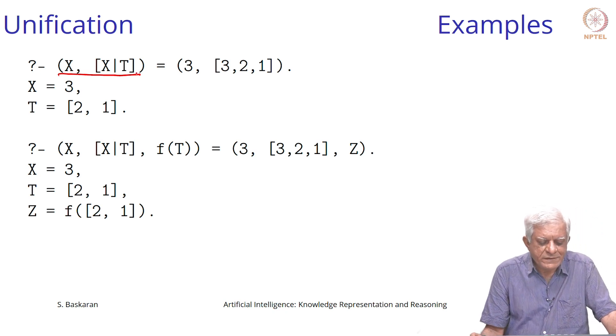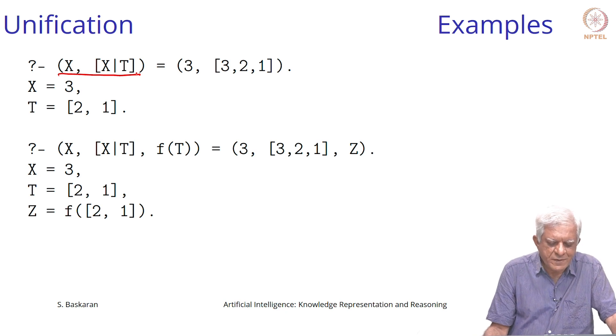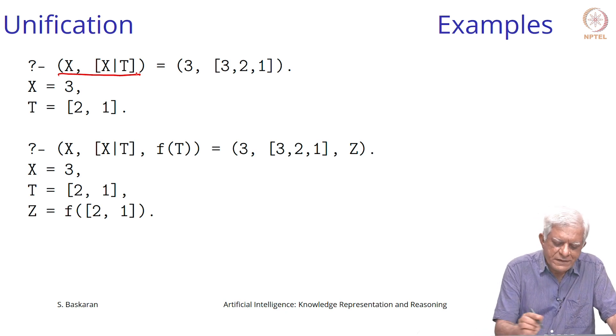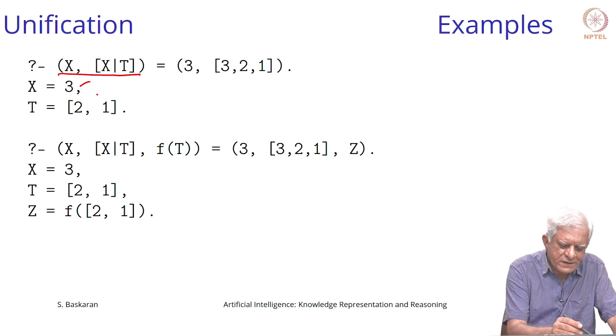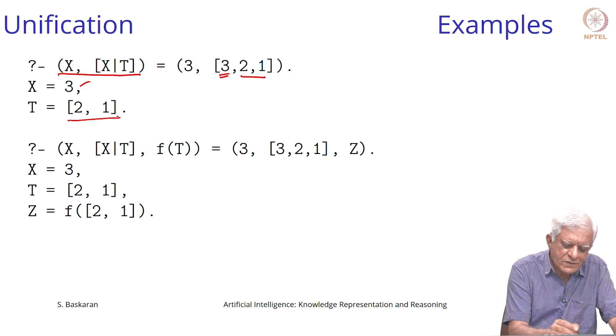Is this pair x and a list starting with x, can they be made the same? Yes, if x equal to 3. x is 3 takes care of the first part, so the second part remains and t is equal to 2, 1.